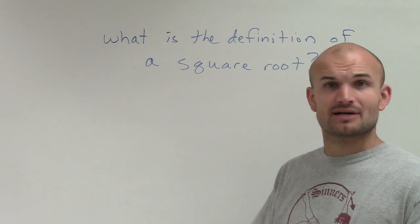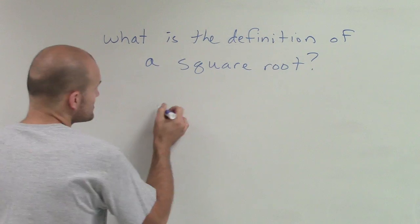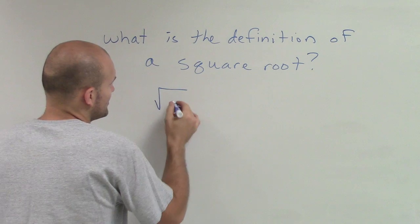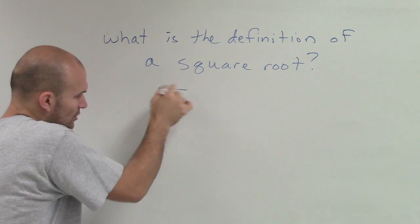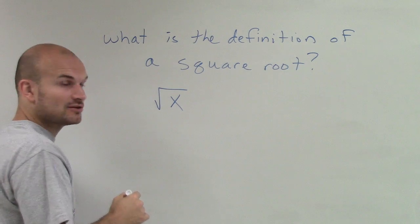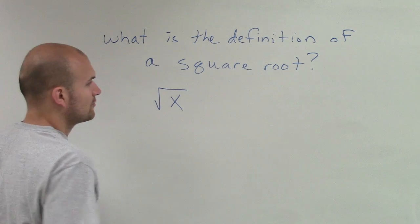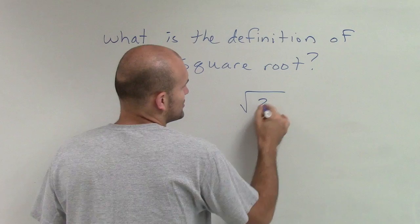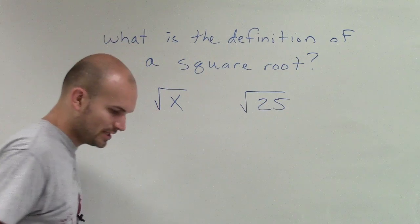We've talked about square roots, maybe if you've checked some videos. We've looked at a number with this little symbol, which is called the radical symbol, and then the number inside, which we call the radicand. And then we looked at dealing with numbers, like the square root of 25.